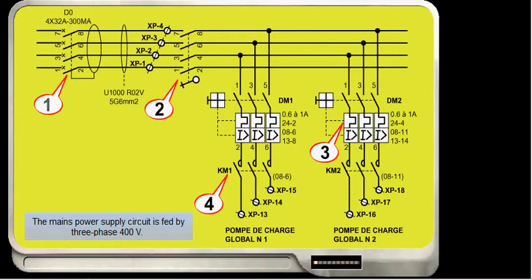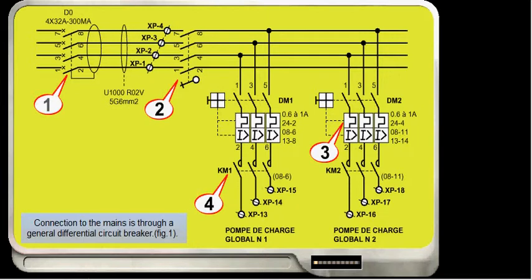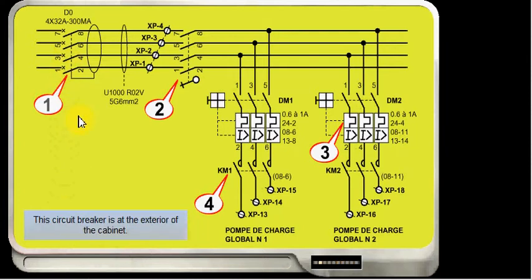The main power supply circuit is fed by three-phase 400 volts. Connection to the mains is through a general differential circuit breaker. This circuit breaker is at the exterior of the cabinet.